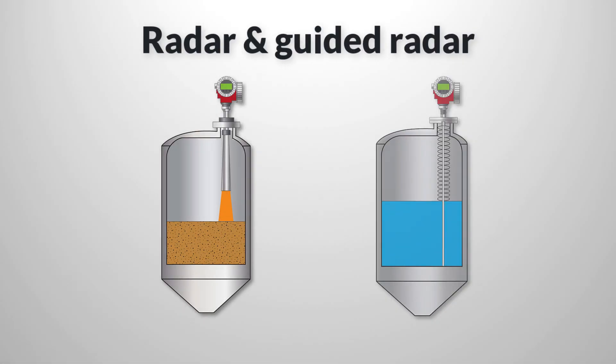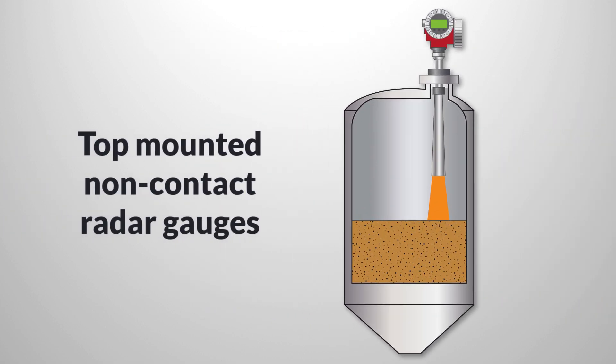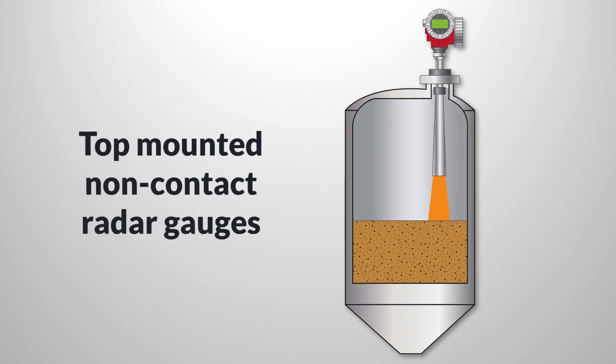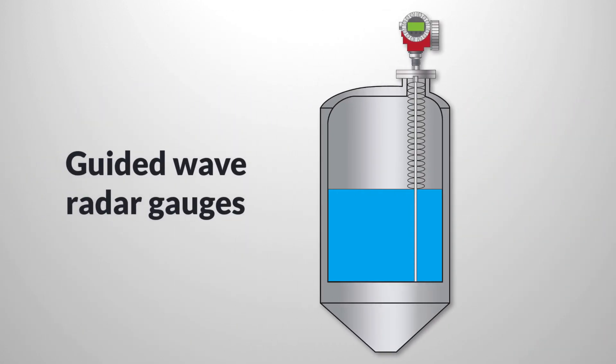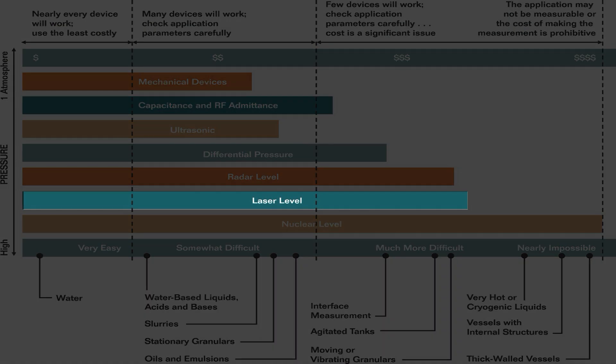Radar gauges are among the most versatile at a price. Radar gauges come in two variations. Top-mounted, non-contact radar gauges use an open-beam, reflected radar signal to determine liquid level. Guided wave radar devices are similar, but the radar signal follows a wave guide down to the material, where the surface partly reflects the signal and allows level calculation.